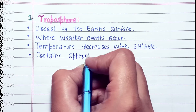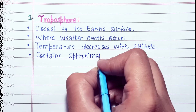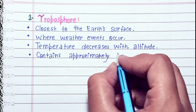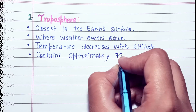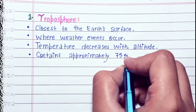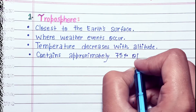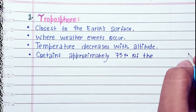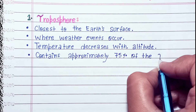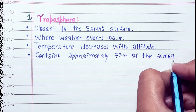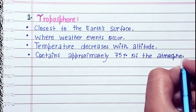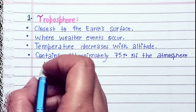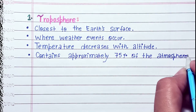First, the troposphere — closest to the Earth's surface, where weather events occur. Temperatures decrease with altitude. It contains approximately 75% of the atmosphere's mass.